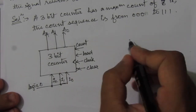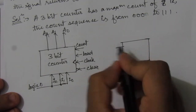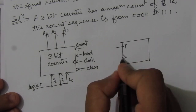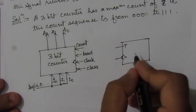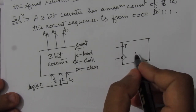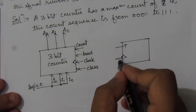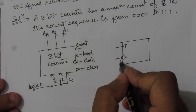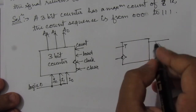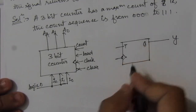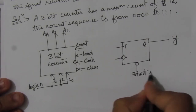We will use a T flip-flop with a T input and an active-low clock input. This means the flip-flop will be activated on the negative edge of the clock signal — that is, whenever there is a 1-to-0 transition, the flip-flop will change its output according to its input. The output of the flip-flop is Y, and we also have an active-low start signal.